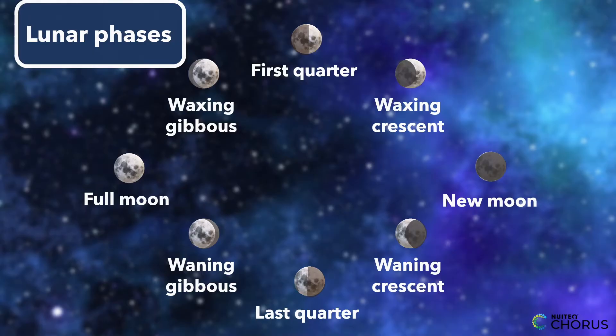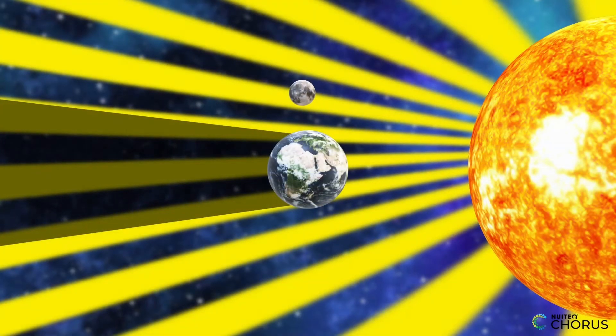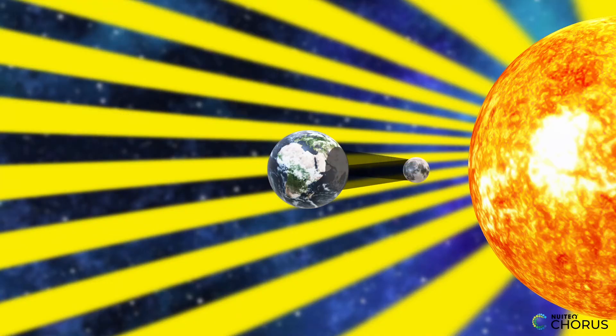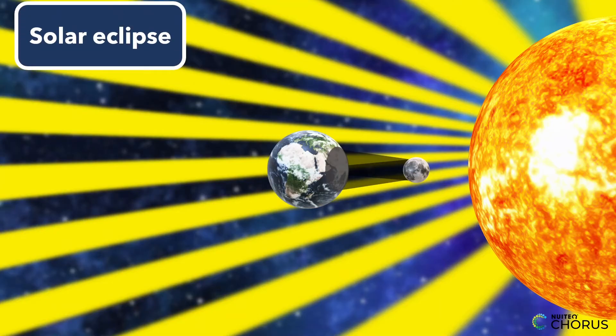Finally, you notice something even cooler. Sometimes, the Earth gets in between the Sun and the Moon, and the Moon disappears. This is called a lunar eclipse. And sometimes, the Moon gets in between the Sun and the Earth, and the Sun disappears. This is called a solar eclipse.